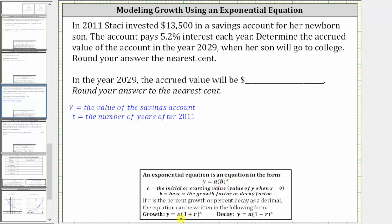The base b is equal to one plus r, where r is the percent growth expressed as a decimal. So the equation is in the form y equals a times the quantity one plus r raised to the power of x. But instead of using x and y, let's use more meaningful variables. Let v equal the value of the savings account, and we'll let t equal the number of years after the starting year of 2011.